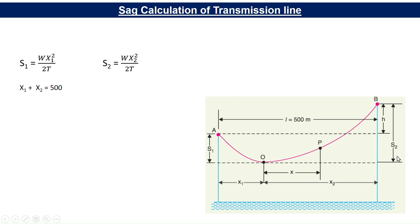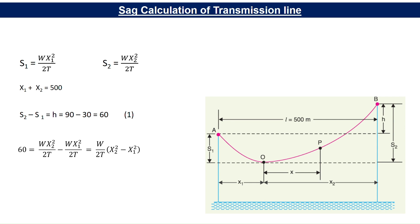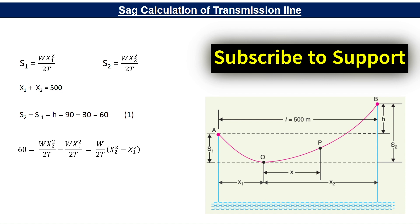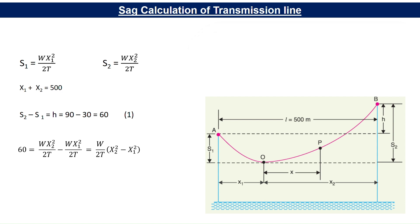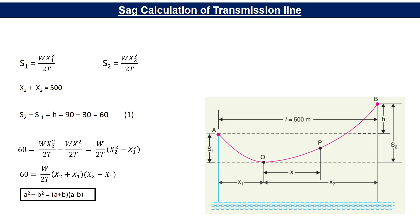S2 minus S1 equals H, the extra height of supported structure B. So S2 minus S1 equals 90 minus 30, which is 60. Substituting the expressions S1 = WX1²/2T and S2 = WX2²/2T into this equation gives: 60 = (W/2T)(X2² − X1²). Using the identity A² − B² = (A+B)(A−B), this becomes: 60 = (W/2T)(X2 + X1)(X2 − X1).